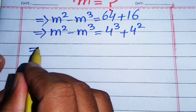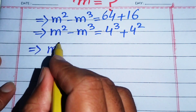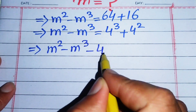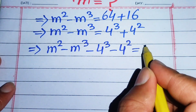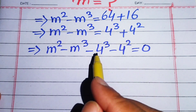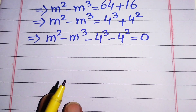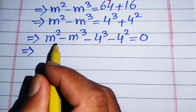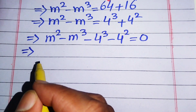In the next step we move all the terms from the right-hand side to the left-hand side. It is written as m squared minus m cubed minus 4 cubed minus 4 squared equals 0, because the two terms that were positive on the right-hand side become negative when moved to the left. After that, we make pairs: cubic term with cubic term, and square term with square term.